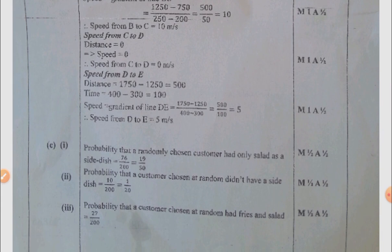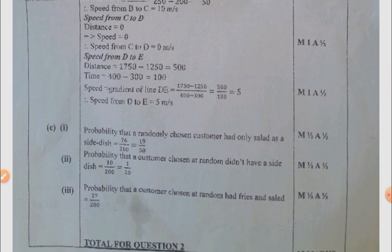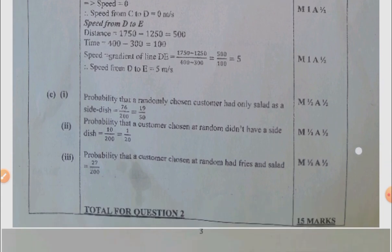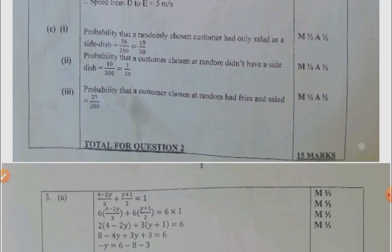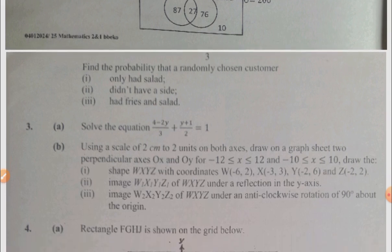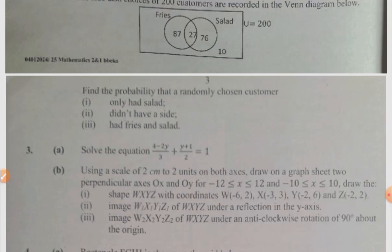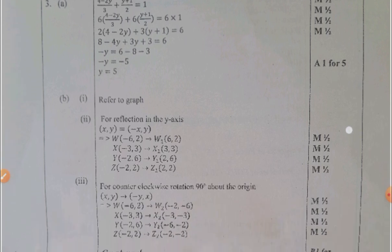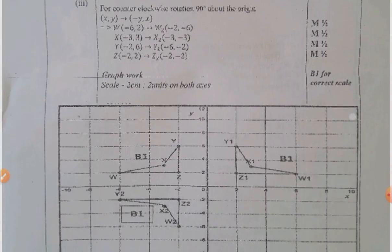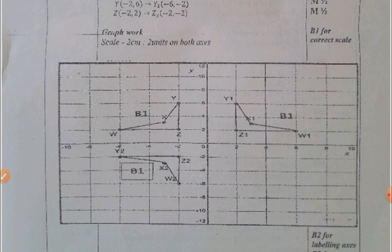And then the C has to do with the event diagram, finding the probability. Question three has to do with linear equation, and then the B has to do with linear transformation. G is your graph sheet, your A, then your B is how the linear transformation is going to look like.